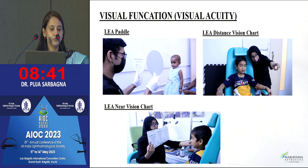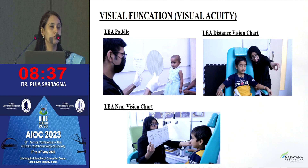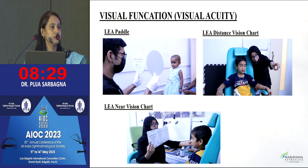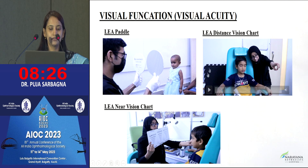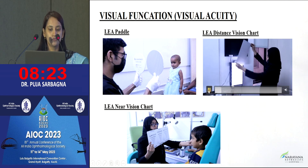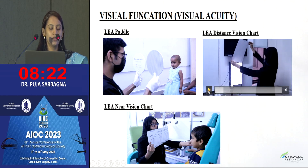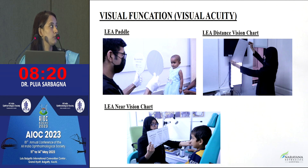If the child can respond to Lea Paddle 8.0, we give them the Lea symbol chart, which uses 4 shapes — apple, house, circle, and square. We tell the mother to train the child on those 4 shapes, and then we start their Lea distance vision chart. For this, we use a light illumination box.